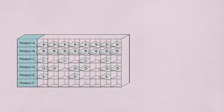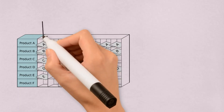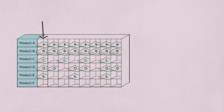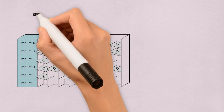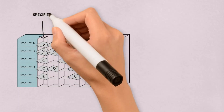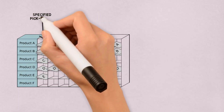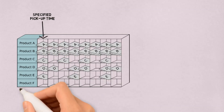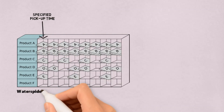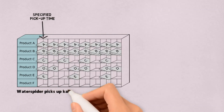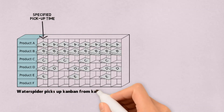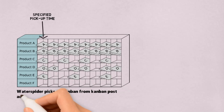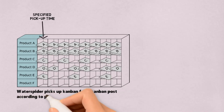A typical HiJunka Post has horizontal rows for each product and vertical columns for identical time intervals of picking or pulling time. The water spider will pick up kanban from the HiJunka Post according to pick-up time.